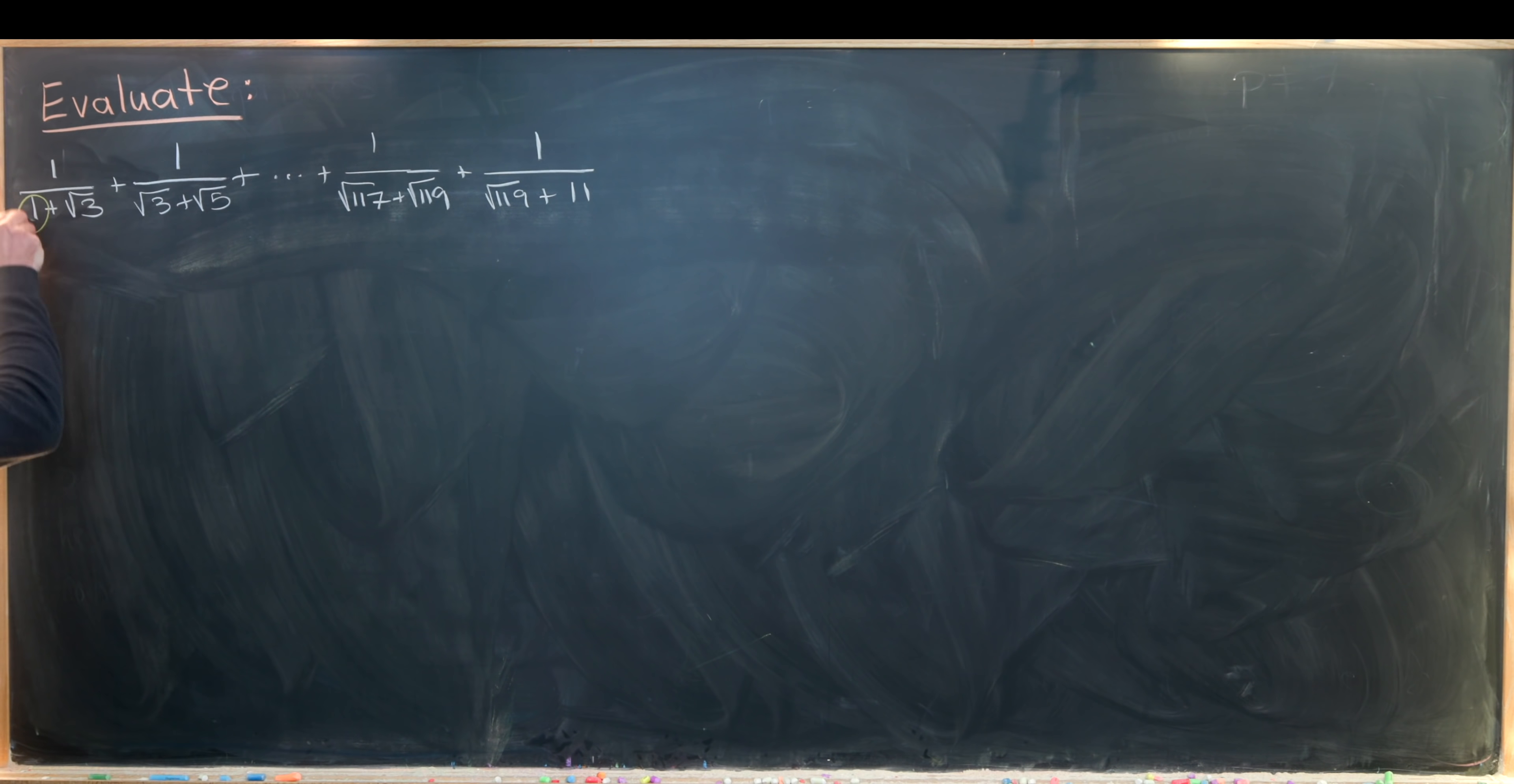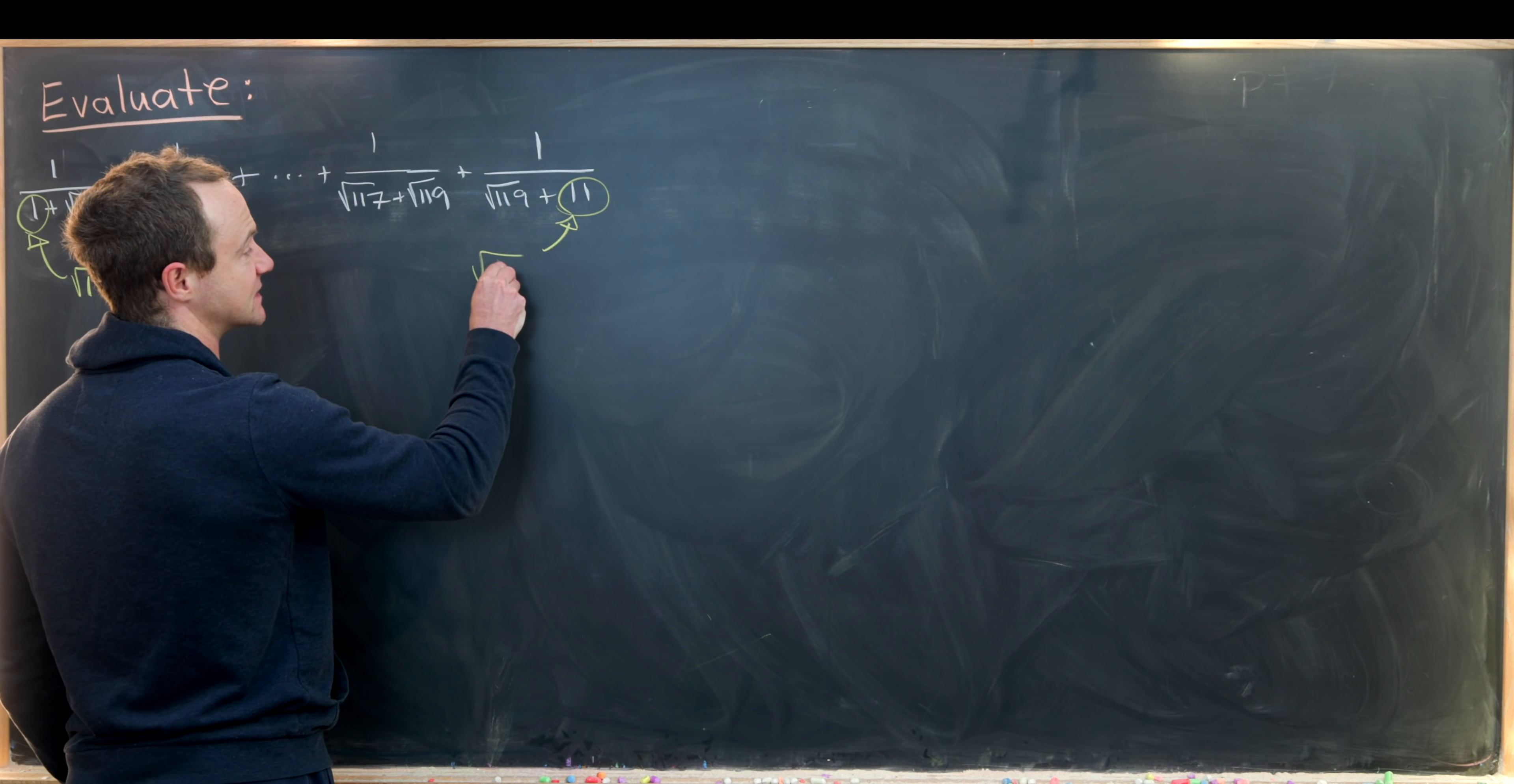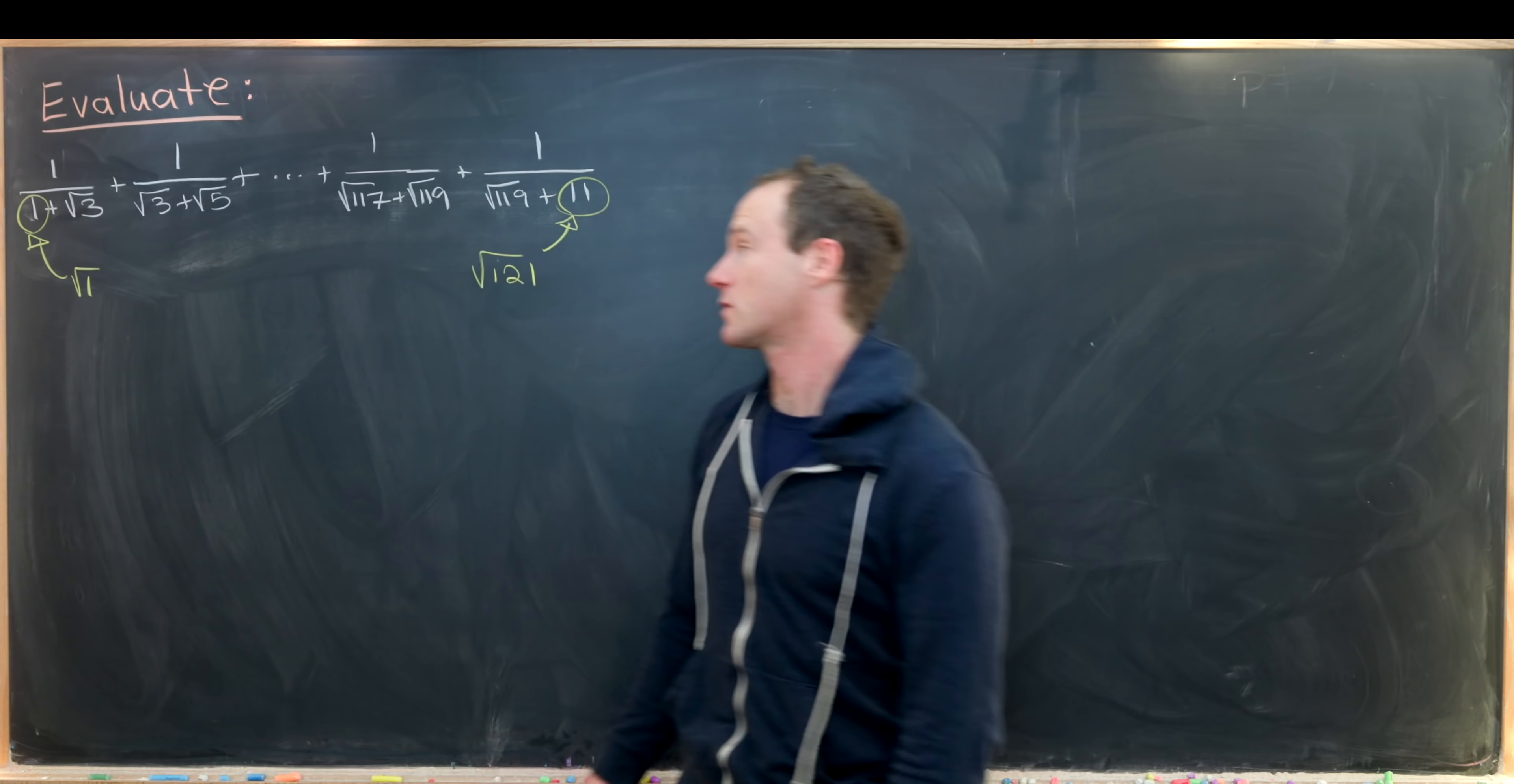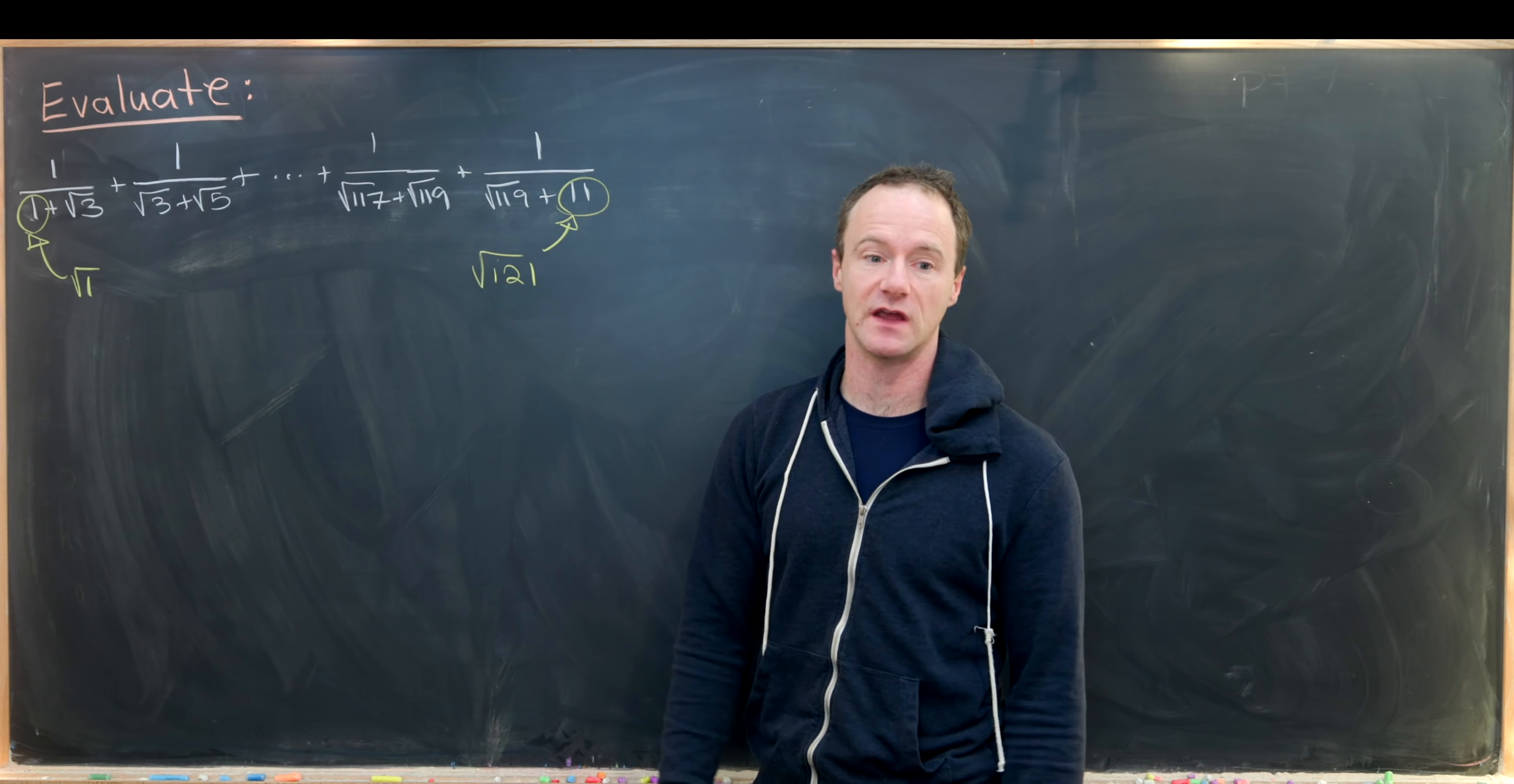Before we get started I want to notice that these first and last terms are not outliers because indeed 1 is the same thing as the square root of 1 and 11 is the same thing as the square root of 121. So indeed we do follow a pattern here where we're looking at the reciprocal of the sum of the square roots of two consecutive odd numbers where we have overlap from one term to the other.